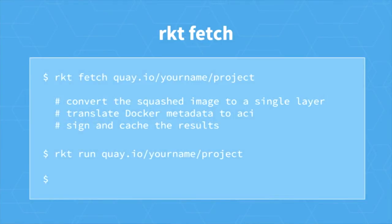We actually support the Rocket Fetch command and have all the metadata tags in place on Quay.io. If you do a Rocket Fetch, you first have to do a Rocket Trust because Rocket takes trust very seriously — you put our signing key into your local trust tree. Then we create a specialized version of that squashed image translated to ACI format, including all the metadata we can think of: environment variables, the run command, any isolators we know how to translate such as Docker volumes. We make a best effort to faithfully translate everything to ACI format, and then you can Rocket run that image.